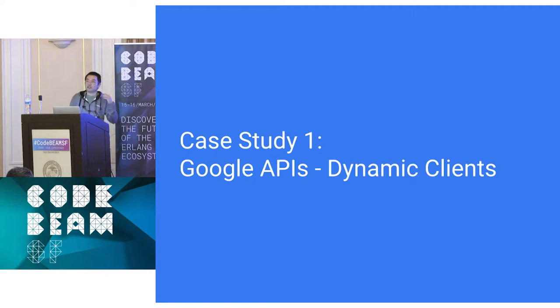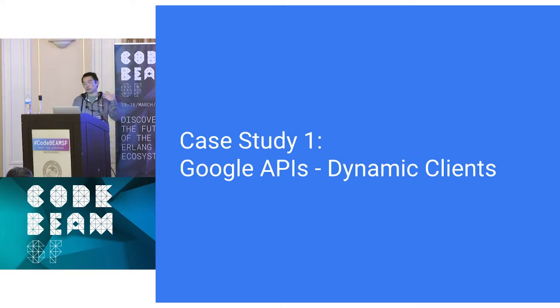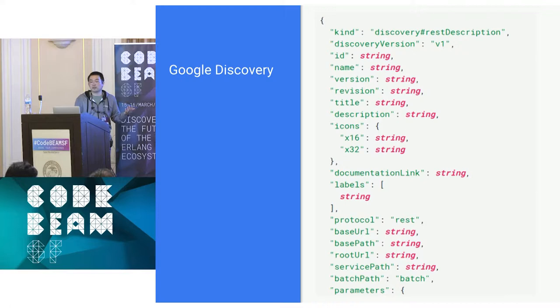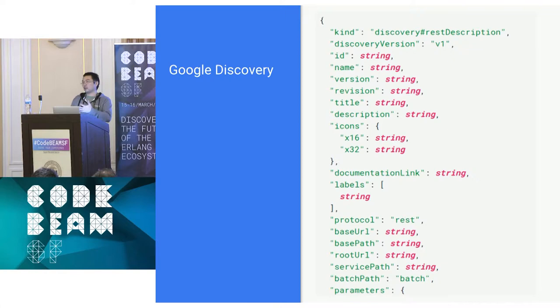Our first case study is one of Google's first forays into providing API clients for languages. Let's go back to 2011. We made the decision to automate this process, and first had to figure out how to define our APIs. We decided on a new format called Google Discovery Docs, published in a new service called the API Discovery Service. It's a JSON format describing a RESTful, resource-based API — defining objects with methods on them, or methods on collections of objects.